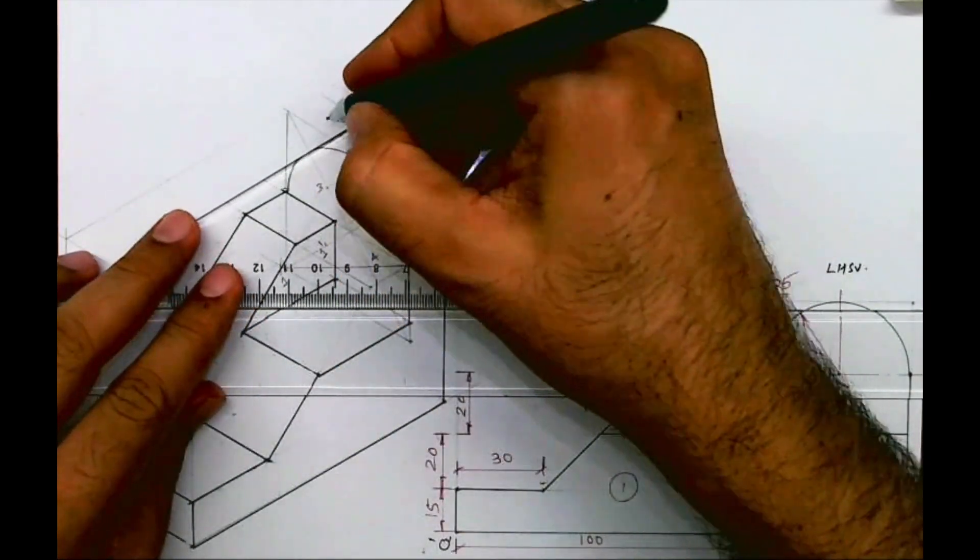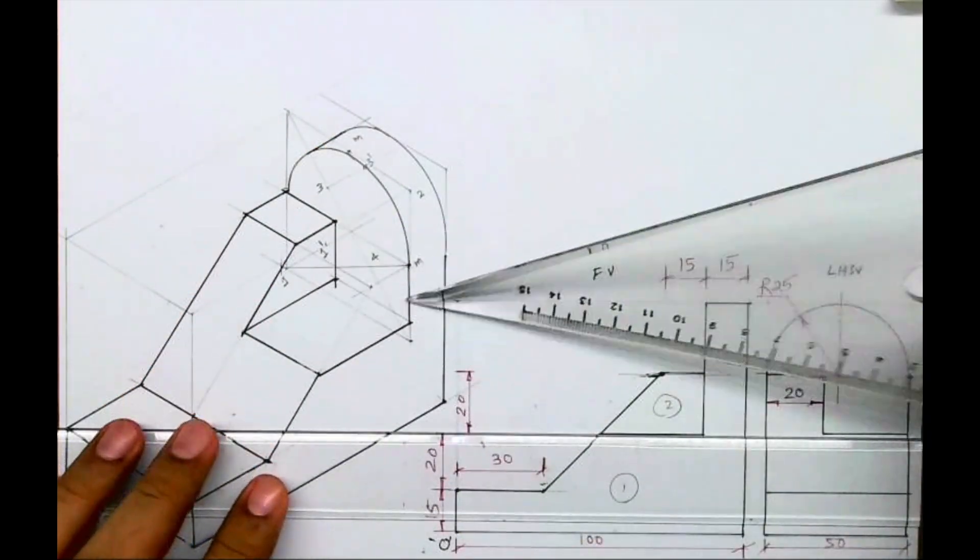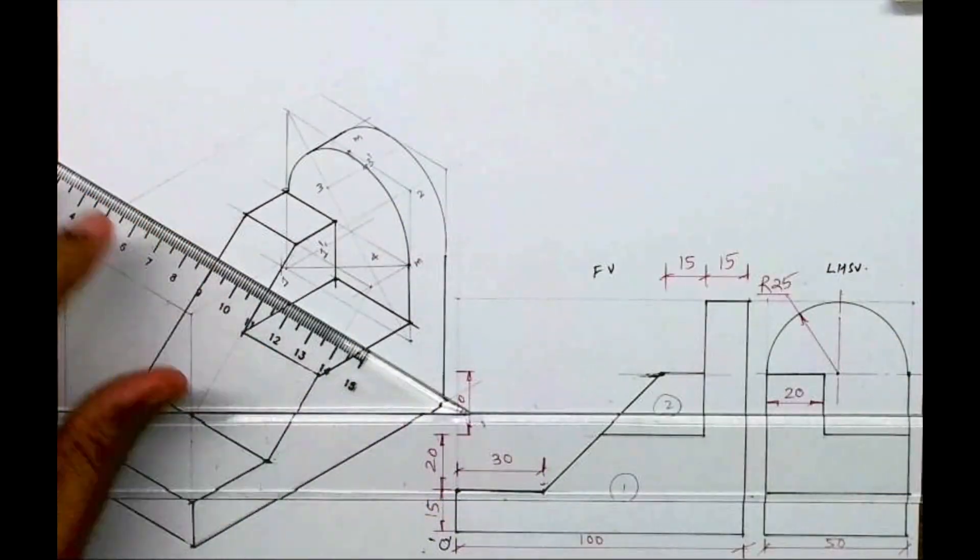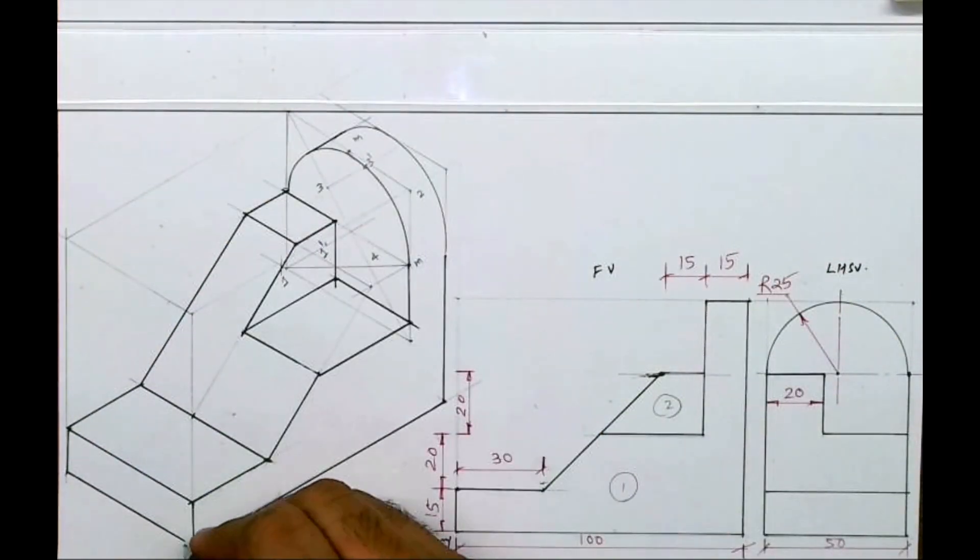It's a complete isometric sum. It is from Pune University engineering drawing paper. I hope everyone understood. Thank you.